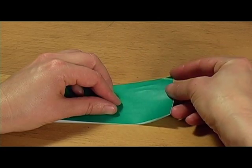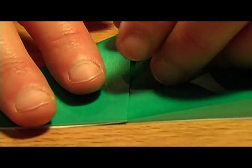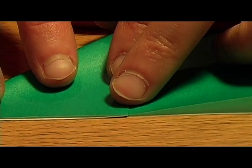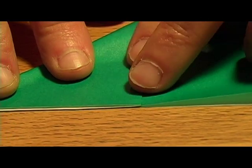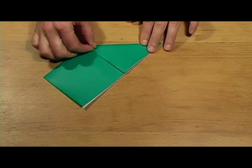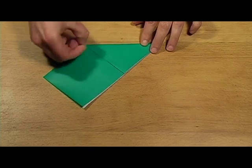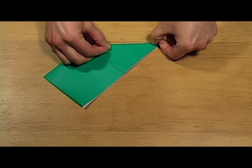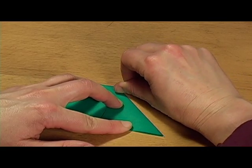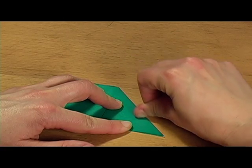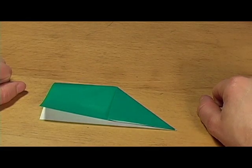Next fold is you take this corner and bring it down so that this edge lines up with that edge of the paper. Again, it'll help you later if you take this fold and really flatten it. Second fold.